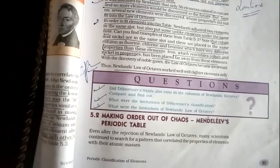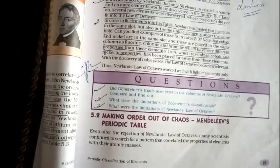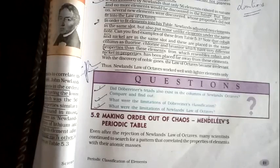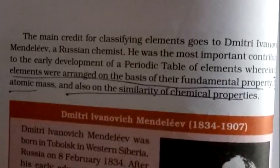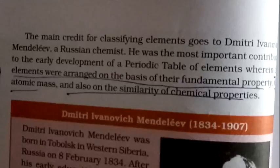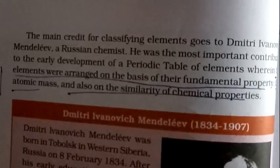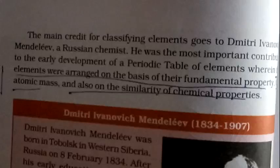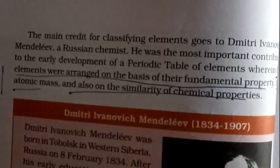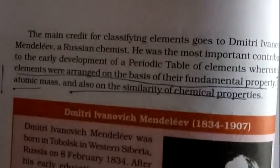Mendeleev's Periodic Table — what was its basis? Many scientists continued the search for a pattern to properly arrange elements. Mendeleev also used atomic mass as a basis. The credit for the classification we use today — the current periodic table — goes to Mendeleev, who was a Russian scientist and made an important contribution to the early development of the periodic table. His main fundamental properties used were atomic mass along with chemical and physical properties of elements.